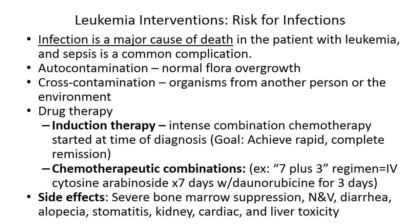Drug therapy for leukemia includes chemotherapeutic combinations and induction therapies. Induction therapies are intense combinations of chemotherapy started at the time of diagnosis with the goal of achieving rapid complete remission. Chemotherapeutic combinations use different drugs over several days. One example is the seven-plus-three regimen: IV cytosine for seven days with daunorubicin for three days.